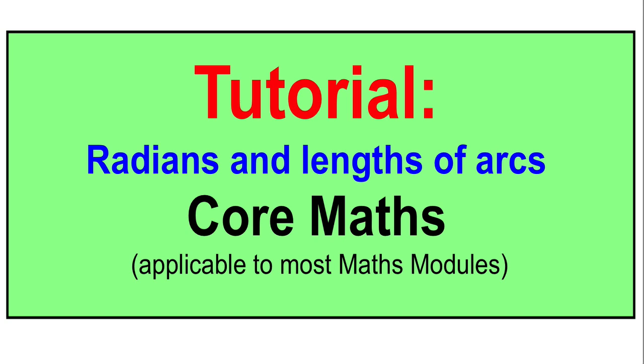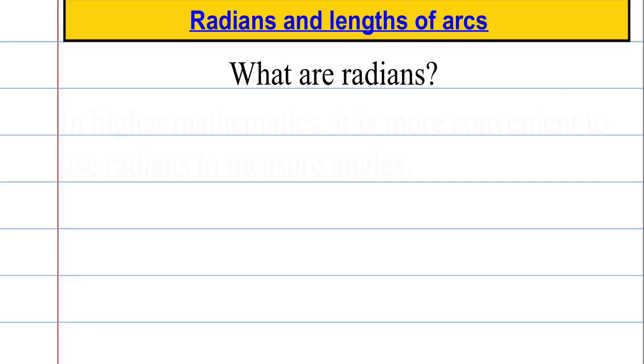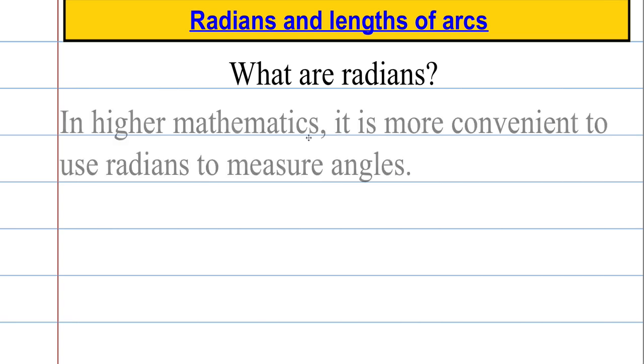OK so we're going to start off by talking about radians and that begs the question what is a radian? Well radians are another form for measuring amounts of turn so we can use radians instead of degrees. What we'll find is that in higher mathematics it's far more convenient to use radians to measure angles, in particular when we're doing trigonometry and further calculus.